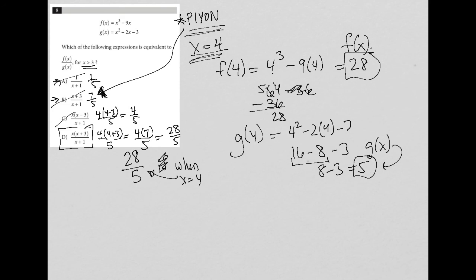Forgive me for the length of the video, but I squeezed in two very different approaches. I really like the plug-in-your-own-number method because you don't have to remember all the factoring and simplifying steps. All you need to remember is: if you see variables in the answer choices, this might be a great strategy to use.